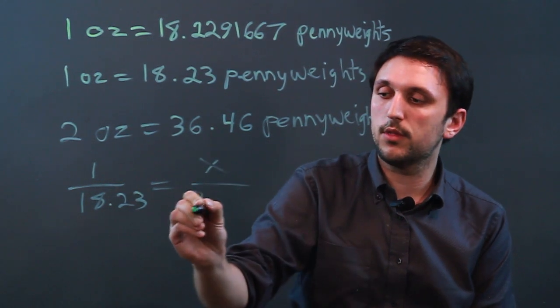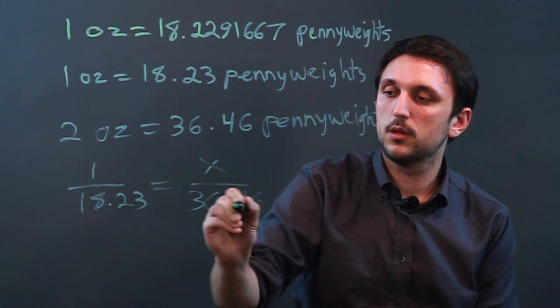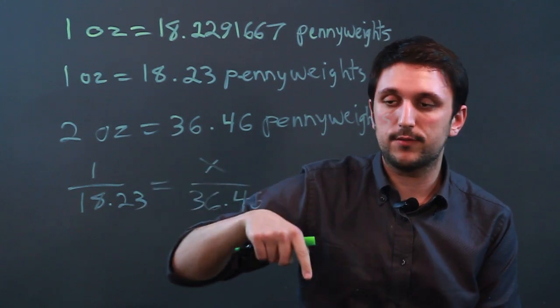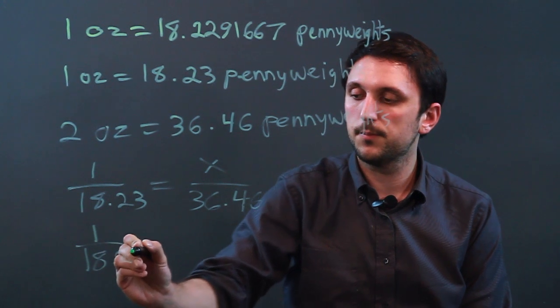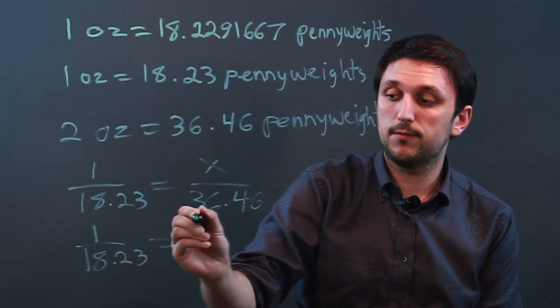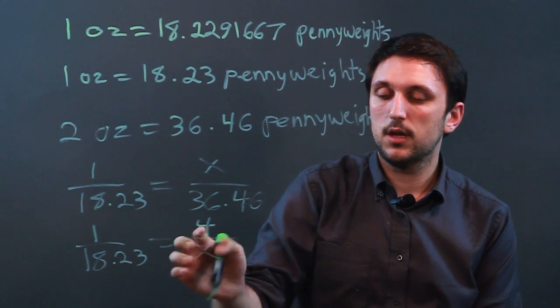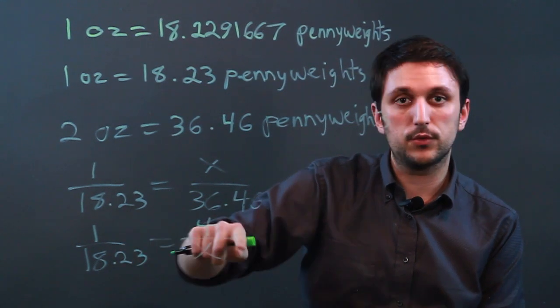So for example, we'd say 36.46 and then you cross multiply to solve for X. Or you can say one over 18.23 equals say four ounces over X. And then you would solve for X here by cross multiplying.